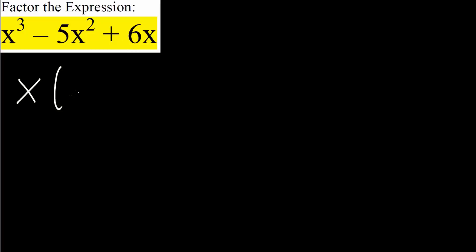We want to factor this expression completely. The one thing that we notice about this problem is that each term has an x. So right away we can factor out an x: x times the quantity x squared minus 5x plus 6.